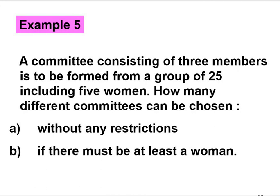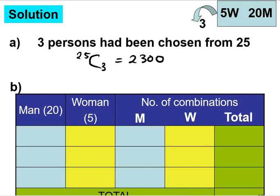For b, there must be at least one woman. We have 5 women and 20 men, so there must be at least one woman. Women can be either 1, 2, or 3. If there is 1 woman, men is 2, because we want to form a committee which consists of 3 members. If we have 2 women we have only 1 man, if we have 3 women that means we have 0 men.